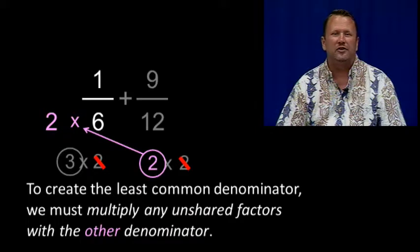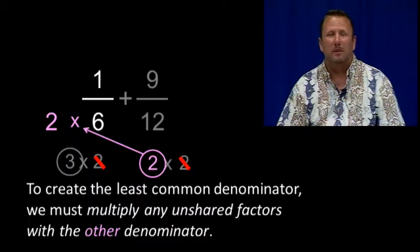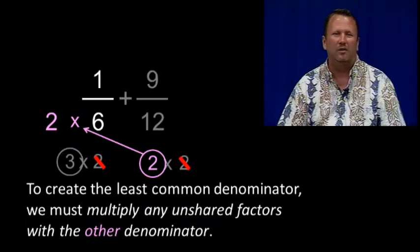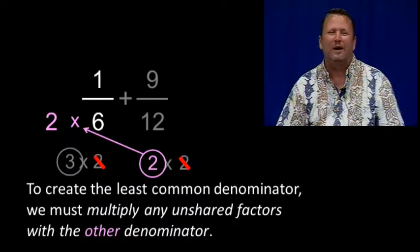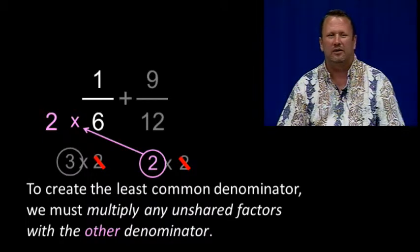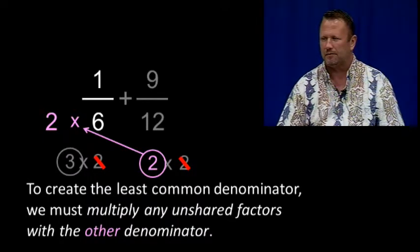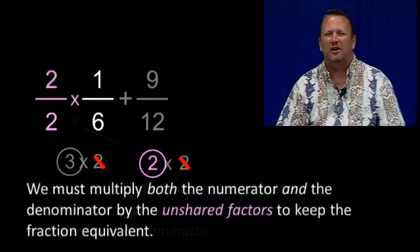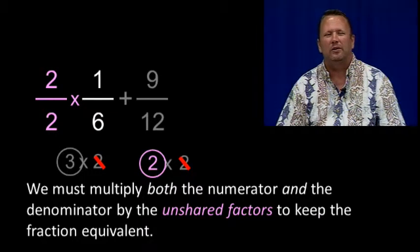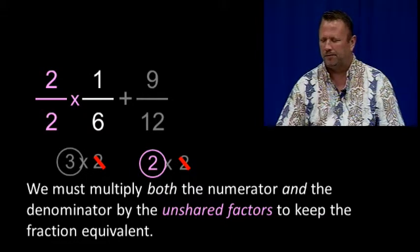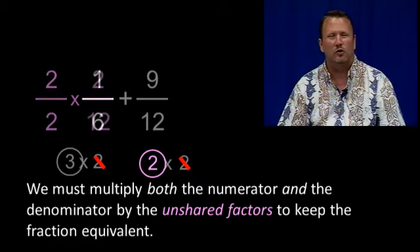Here, we've taken the unshared factor 2 and multiplied that with the denominator on the left. To create the least common denominator, we must multiply any unshared factors with the other denominator. Since anything over itself is equal to 1, we must multiply both the numerator and the denominator by the unshared factors to keep the fraction equivalent. So here, we've taken the fraction 1 sixth and multiplied that with 2 over 2, which gives us 2 over 12.